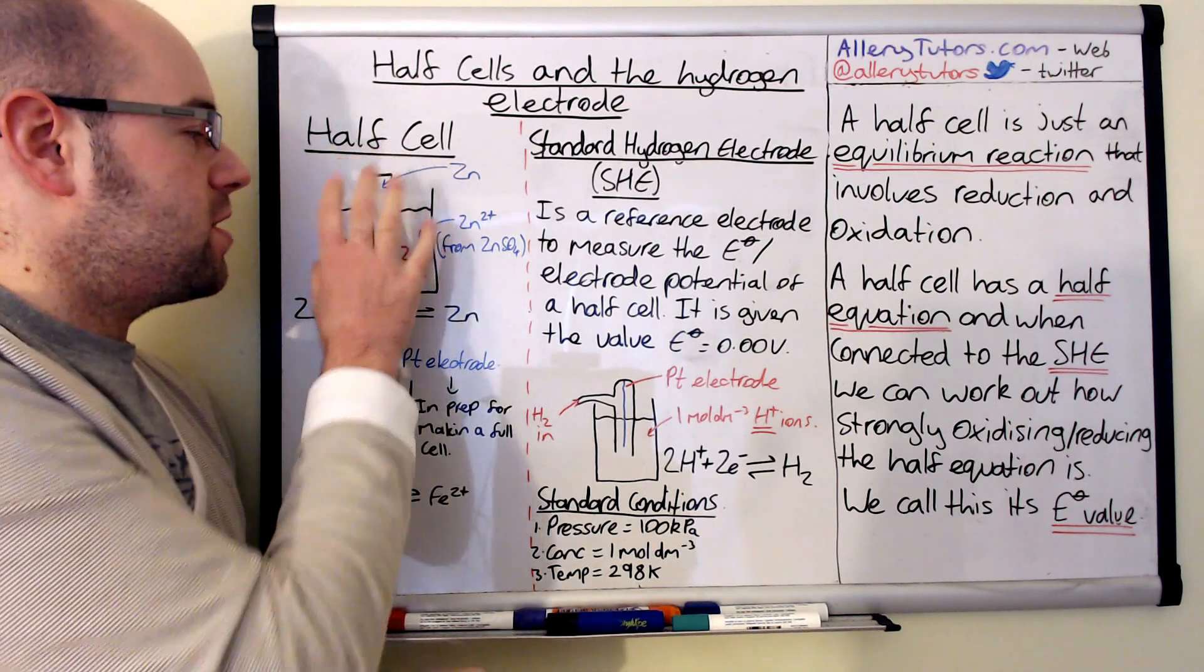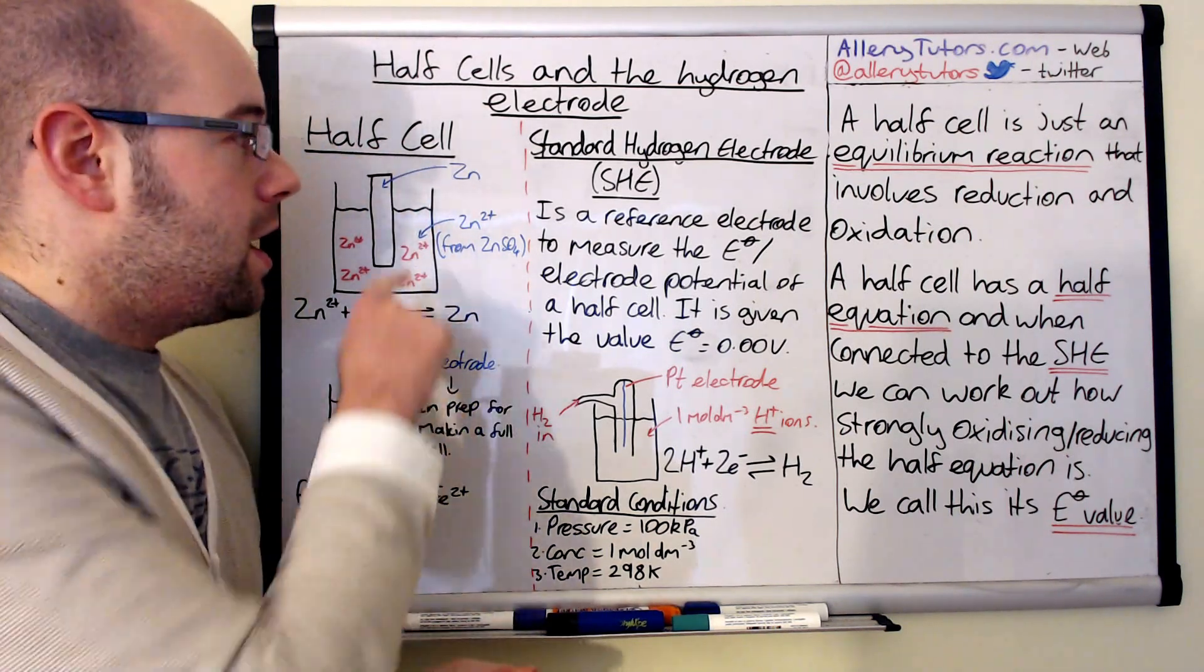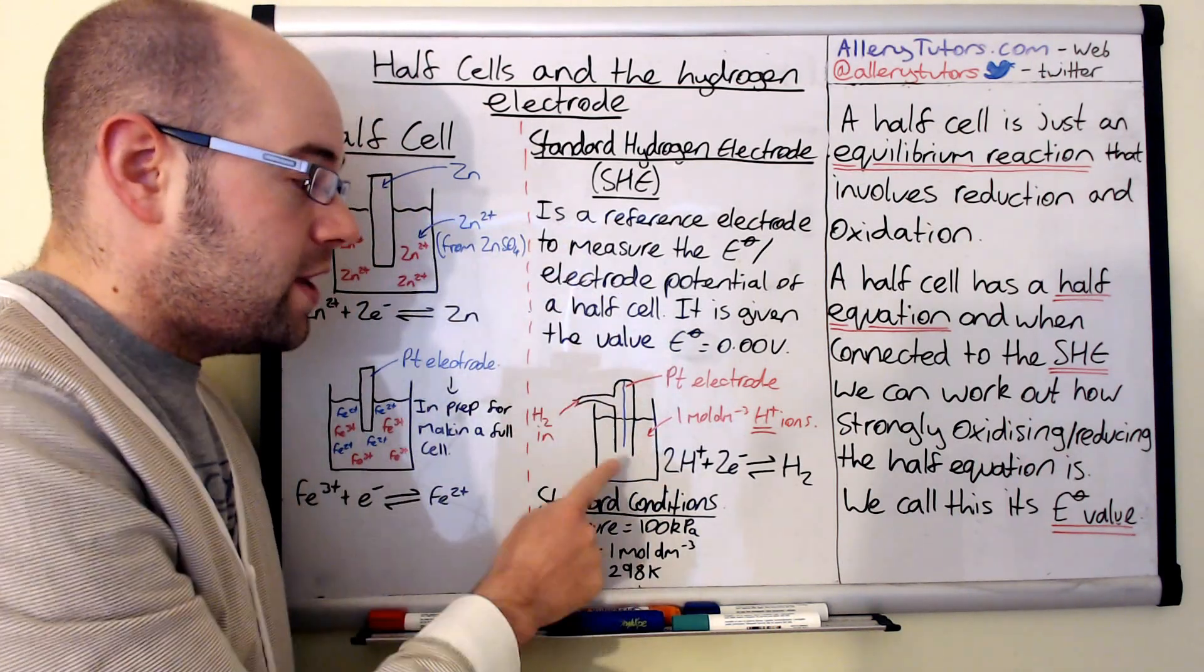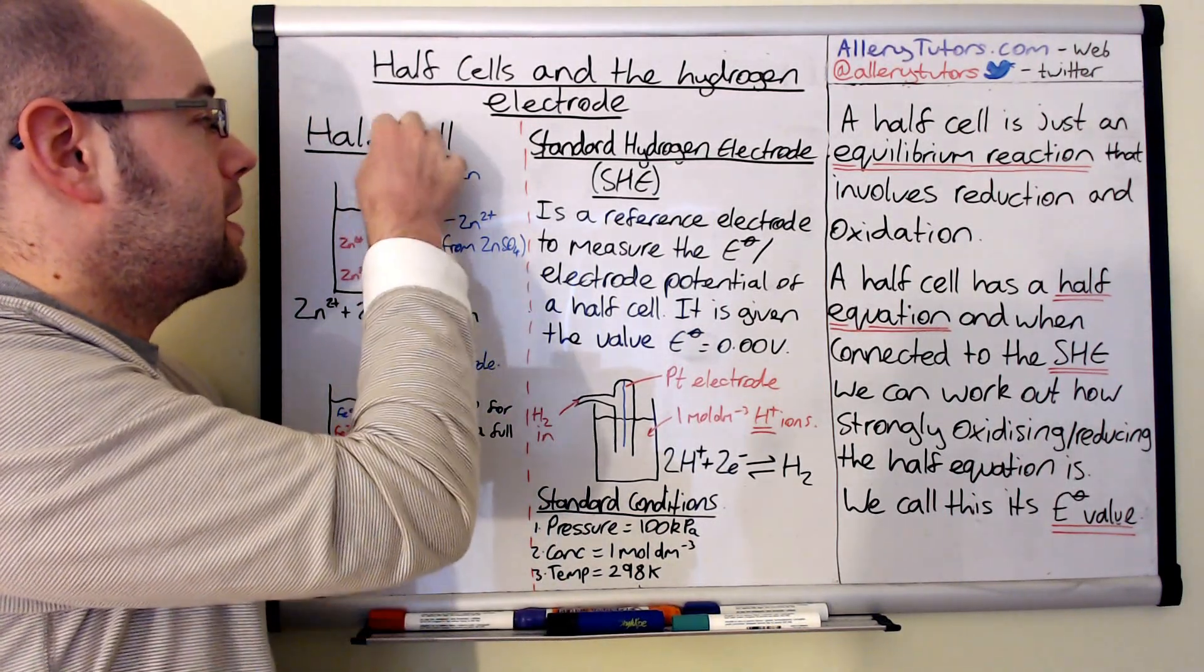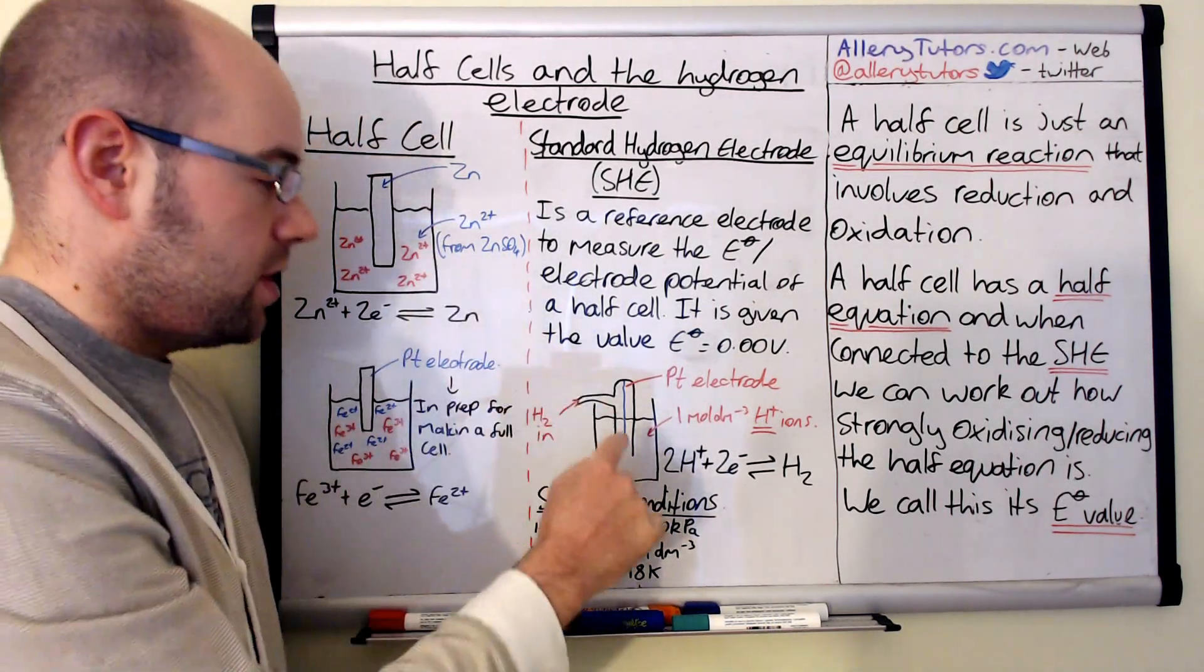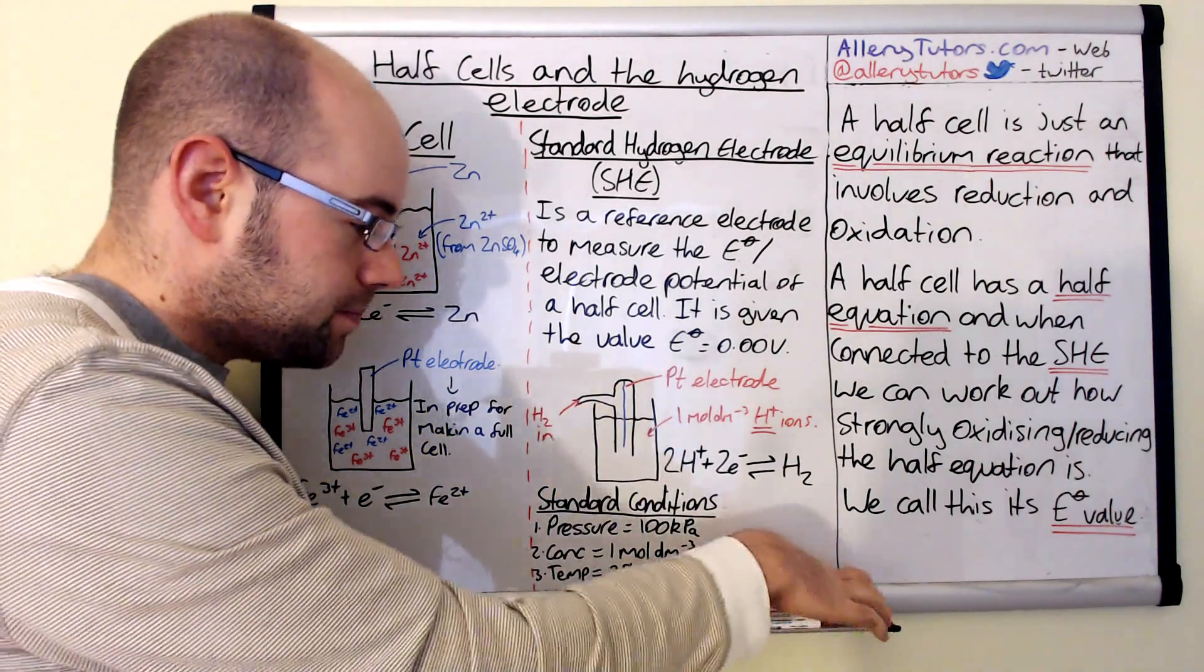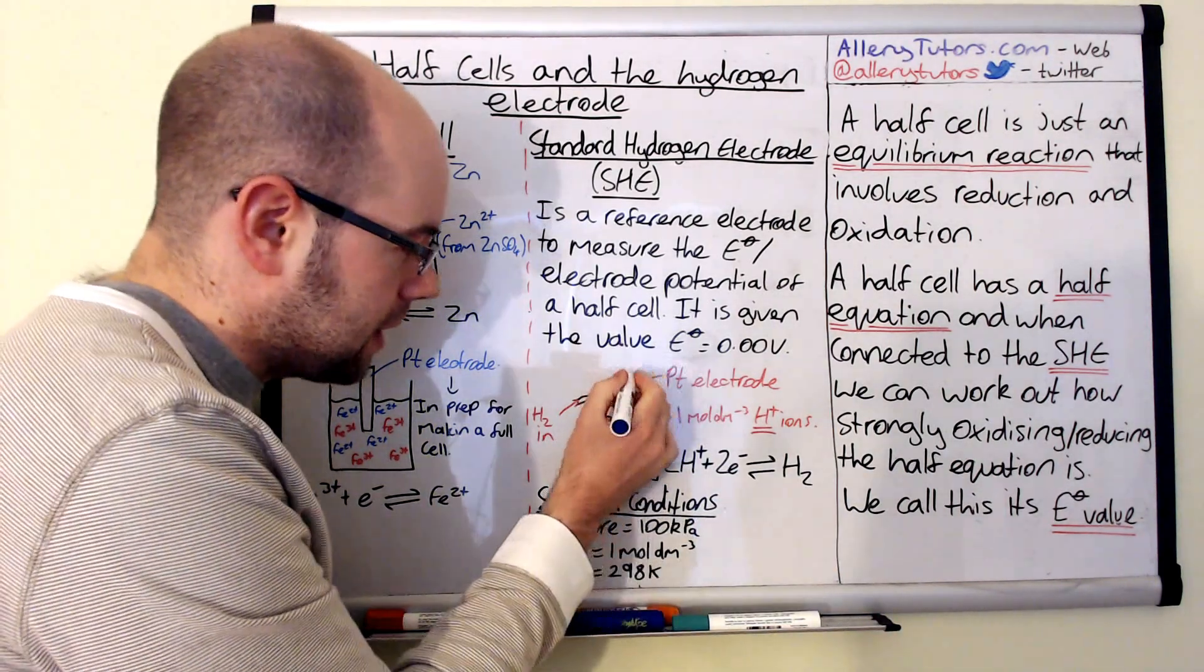For example, we can take this half cell here, which is the zinc one, and we can connect it to the standard hydrogen electrode. All we do is we take a wire, we clip a wire to the zinc electrode here, and we clip it to the platinum electrode. I'll just extend that out of the glass tube. We can connect it to that platinum electrode.